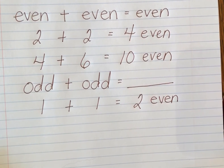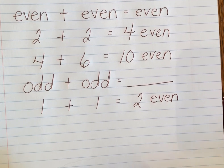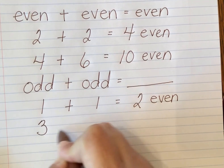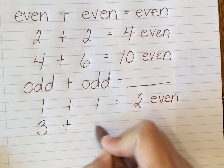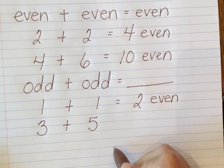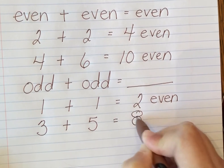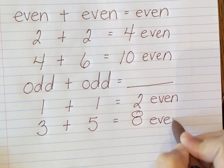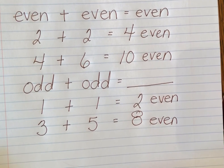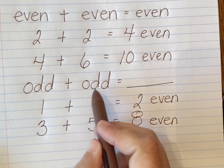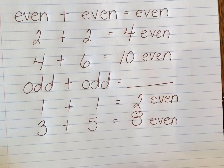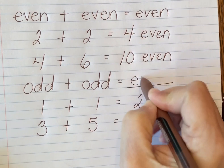Let's try another example. Another odd number: three plus five — both of those are odd. When I add them together I get eight, which is an even number. So the pattern is: if you add an odd number plus an odd number, the sum of those two numbers is always even.